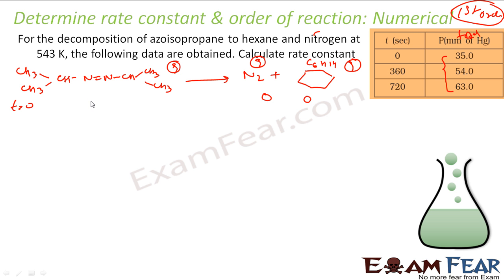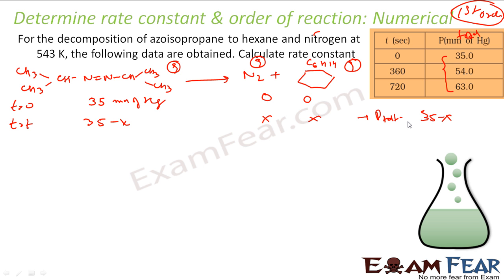At time T, let the pressure of azoisopropane decrease by x. So azoisopropane pressure becomes (35 − x), and N₂ and hexane each have pressure x. Total pressure = (35 − x) + x + x = 35 + x. At T = 360 s, total pressure is given as 54 mmHg, so x = 54 − 35 = 19 mmHg. Therefore the pressure of azoisopropane at T = 360 s is 35 − 19 = 16 mmHg.